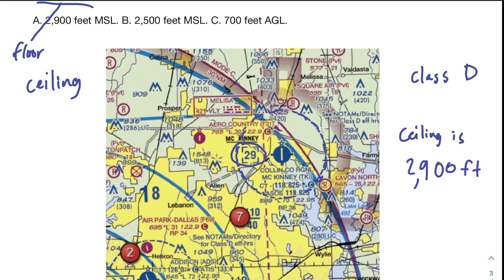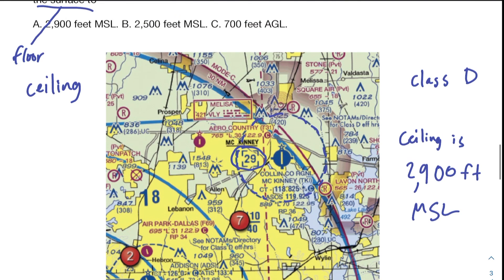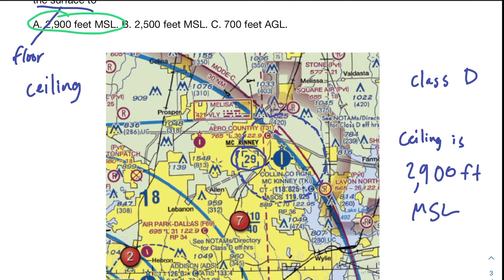Just like before, we need either an MSL or an AGL. This is not in parentheses, so we can assume it's going to be in MSL. If we compare to the responses, A is correct — that is 2,900 feet MSL. We've got the right altitude and the right altitude description: mean sea level. B is incorrect because we don't have the right altitude, and C is incorrect because we don't have the right altitude and we don't have the right altitude descriptor — it's not AGL, it is MSL.